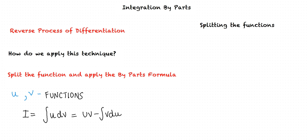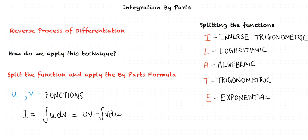There is an order of priority in which we select the functions u and dv. The mnemonic ILATE would be helpful to determine this order of priority. I stands for inverse trigonometric functions, L stands for logarithmic functions, A stands for algebraic functions, T stands for trigonometric functions, and E stands for exponential functions. Note that not following this mnemonic would not give a wrong answer — rather, following this order would make the integration easier.